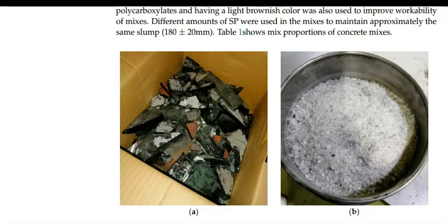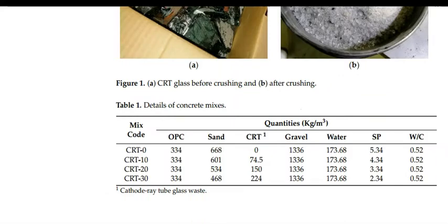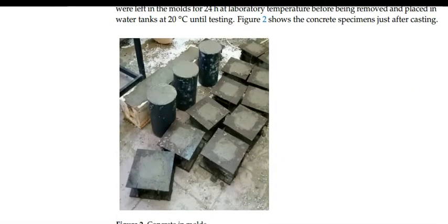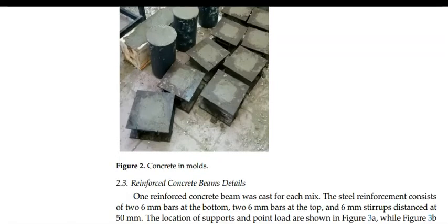The water to cement ratio was kept constant at 0.52. A superplasticizer was used to improve workability of the mixes. One reinforced concrete beam was cast for each mix. The steel reinforcement consists of two 6mm bars at the bottom, two 6mm bars at the top, with stirrups spaced at 50mm.